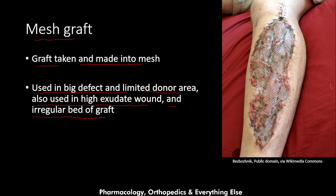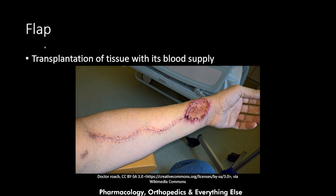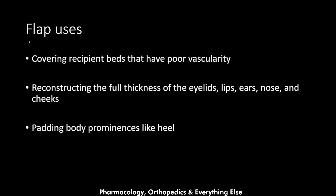Unlike the graft, the flap is a transplantation of tissue with its blood supply intact. As shown in this example, the flap is taken from the area over the radial artery, and the radial artery is taken along with it all the way to the elbow.